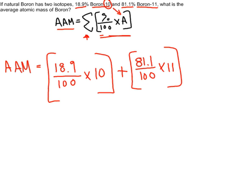So we should expect the average to be closer to 11 than 10, since there's a lot more of the boron-11 in our sample than there is boron-10. Sort of like if a lot of people make 100 on a test, and only a few people make 0.